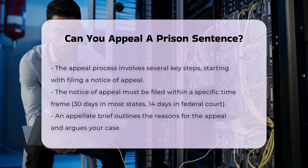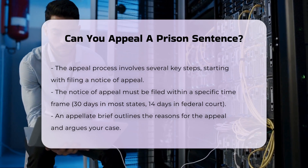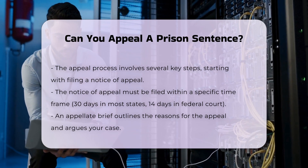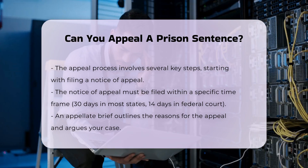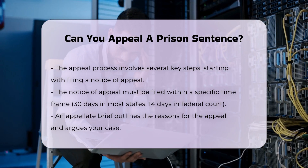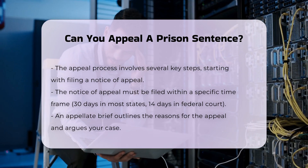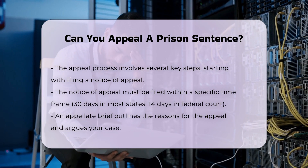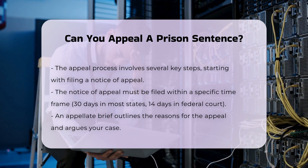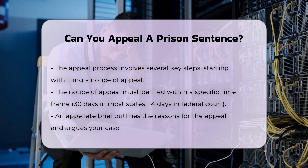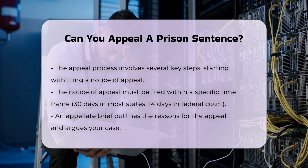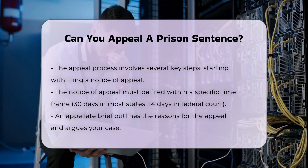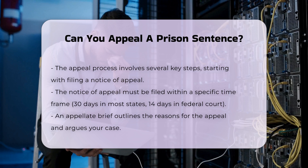Possible outcomes. The appellate court can affirm the conviction and sentence, leaving everything as is; uphold the conviction but reverse the sentence, sending the case back for resentencing; or reverse the conviction and sentence, potentially ordering a new trial.